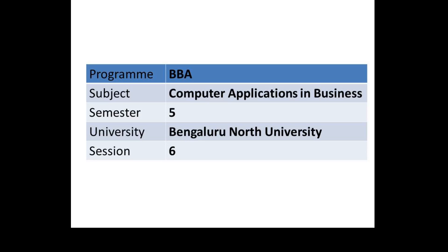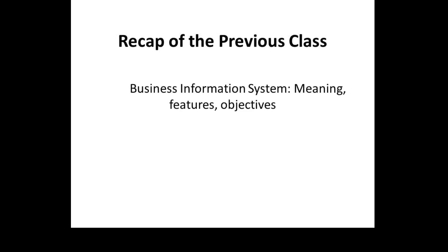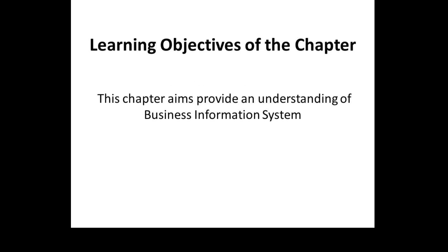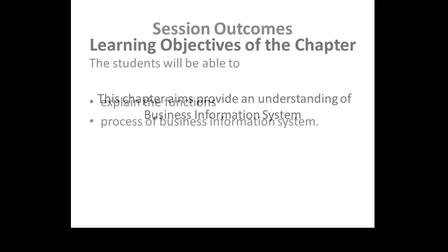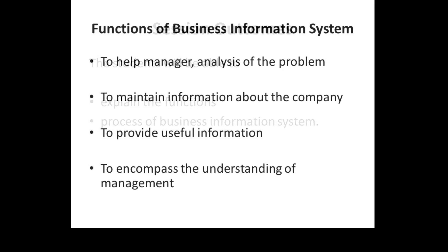Hello everyone. Let us discuss in session 6 of Computer Application in Business about the functions and process of business information system. In the previous sessions we discussed about information systems, business information systems, their meaning, features and objectives. The objective of this chapter is to provide an understanding about business information system, and students will be able to understand and explain the functions and process of business information system.